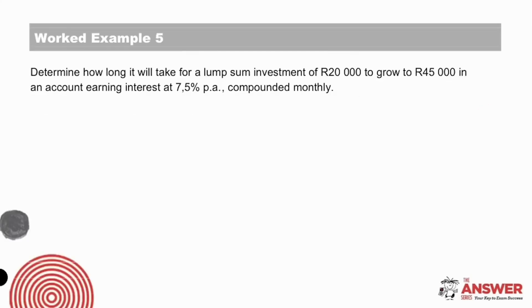Example 5 says determine how long it will take for a lump sum investment of 20,000 rand to grow to 45,000 rand in an account earning interest at 7.5% per annum compounded monthly. This is a question about an investment and it tells us that interest is compounded monthly. Have a look at the information given and pause the video here to give the solution a try on your own first before moving on.